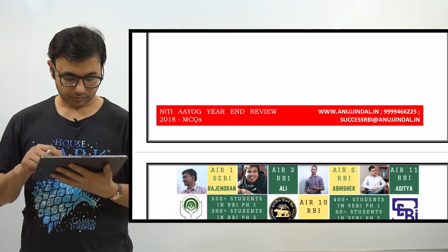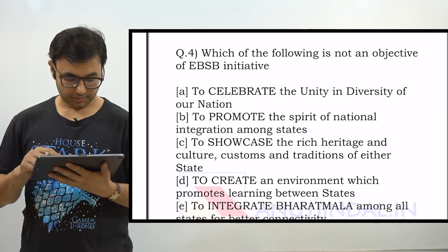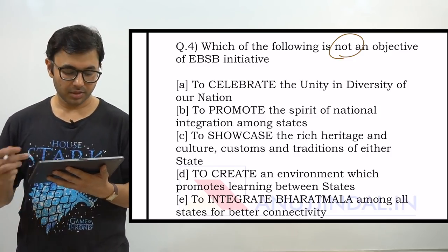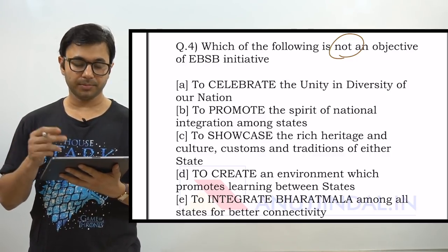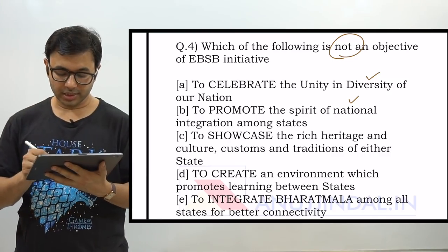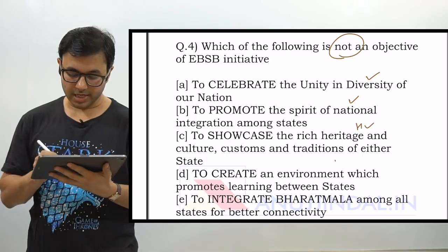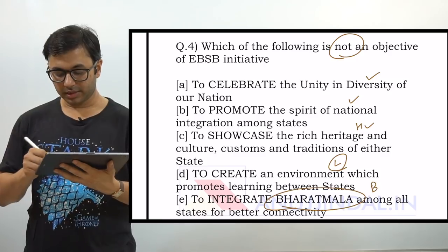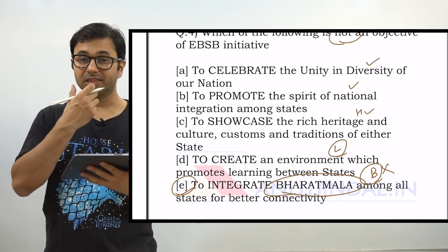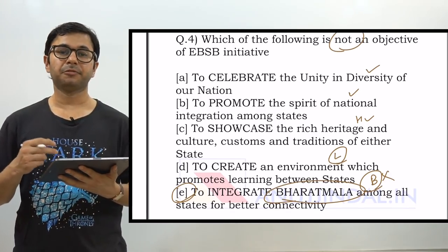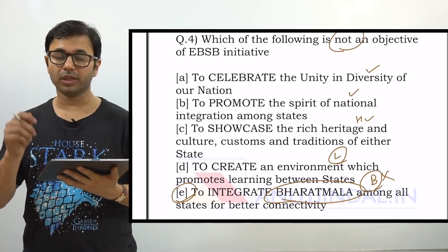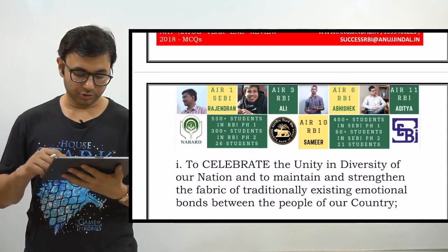The fourth question: Which of the following is NOT an objective of Ek Bharat Shrestha Bharat? We have just revised the objectives. The options include: to celebrate unity in diversity (yes); to promote national integration (yes); to showcase rich heritage (yes); to create an environment which promotes learning (yes); and to integrate Bharat Mala among all states for better connectivity (B). This last option is not part of our UID + HEL acronym, so it is the answer. This shows how creating acronyms makes it easy to identify incorrect options.